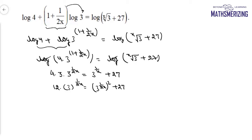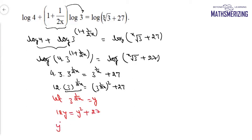I'll let 3 to the power 1 upon 2x equal y. So I can write it as 12y equals y squared plus 27, giving y squared minus 12y plus 27 equals 0.